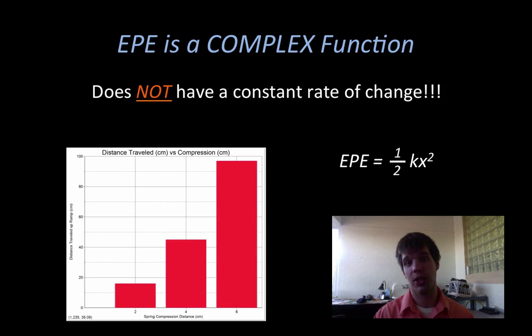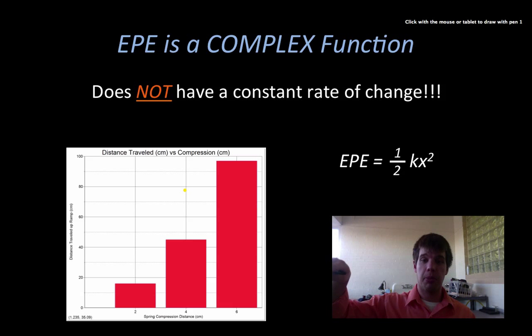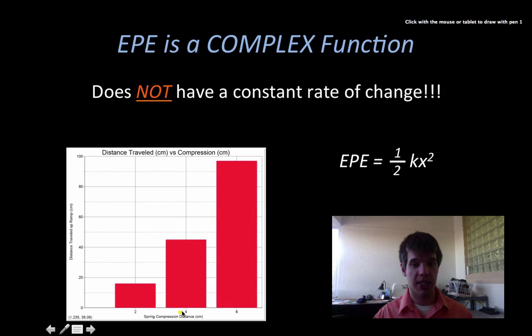So as far as EPE is concerned, when we go to calculate it, EPE is a complex function. It is not linear. And this chart down here is actual data from the car lab that we just recently did. So you put the car down on the block, you compress the spring, you press the button, and it shoots the car up the rink. And then we compress it to a distance that's a little bit further, and it shoots a little further up the rink. And then we compress it to a distance a little further, it goes even further up the rink.